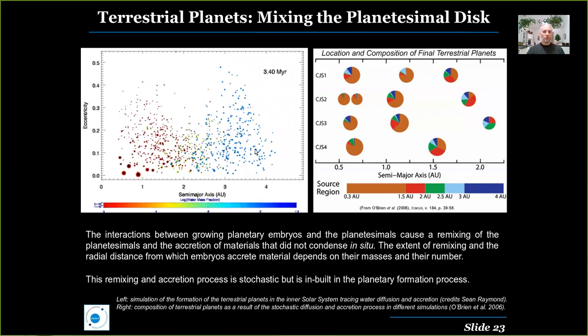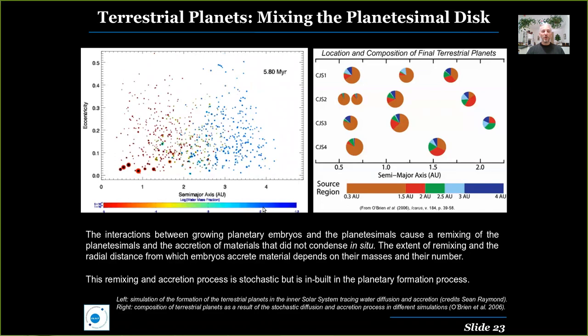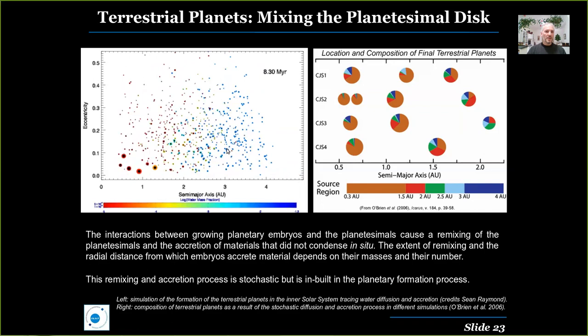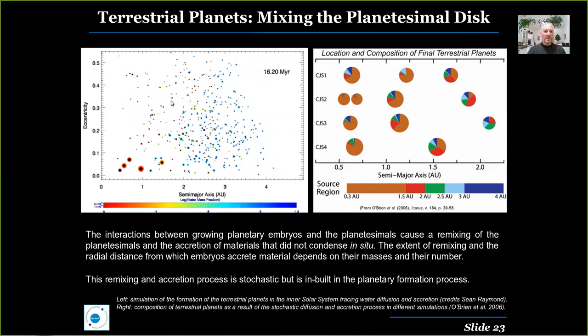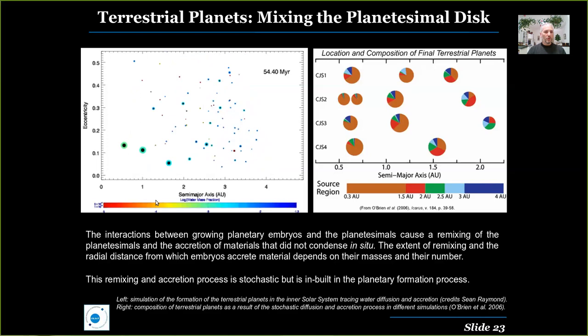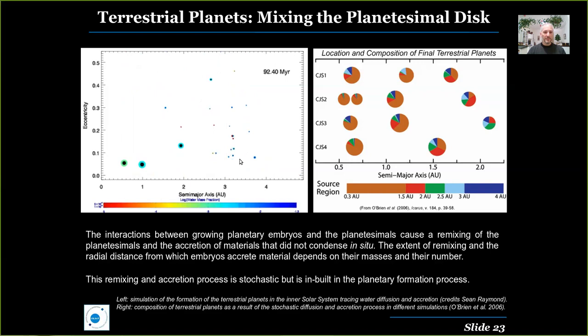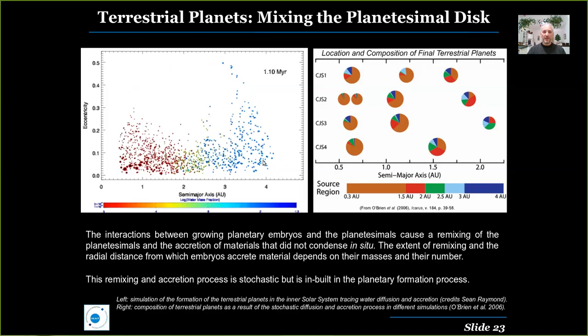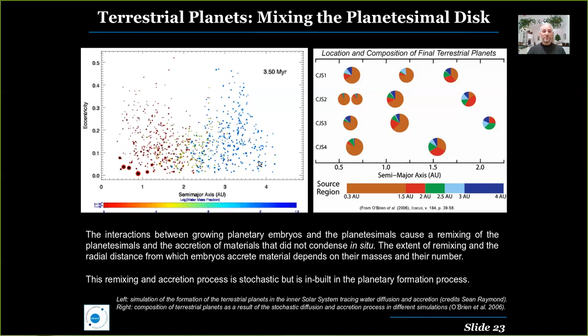We can see this process from another point of view in the simulation on the left, where you can see the diffusion of volatile elements represented in blue — bodies that possess a larger fraction of water in their composition. The water-rich, volatile-rich blue bodies tend to diffuse into the inner region of the planetary system. The planets forming shift in color from red to green and blue, gathering more water from bodies that formed in the outer part of the asteroid belt. Note that in both simulations Jupiter is already present, exciting the asteroid belt and causing bodies to interact with the terrestrial planets.